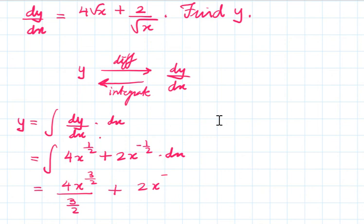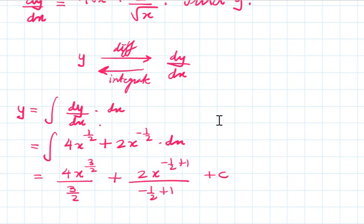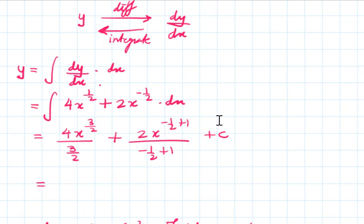Plus 2x raised to -1/2 plus 1 divided by -1/2 plus 1, plus c. c is the integrating constant which we always write. Now we'll simplify this further.